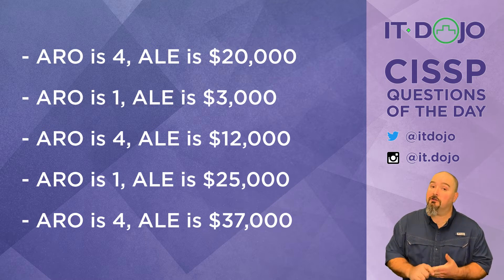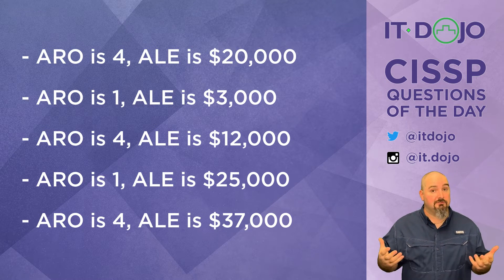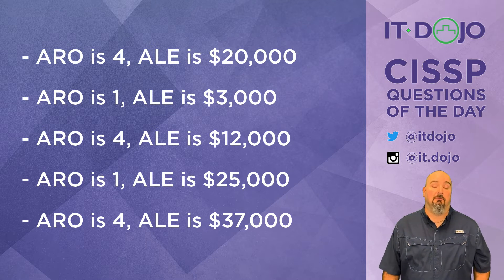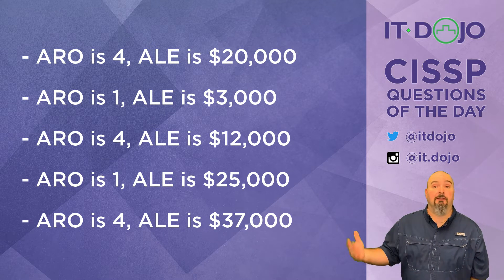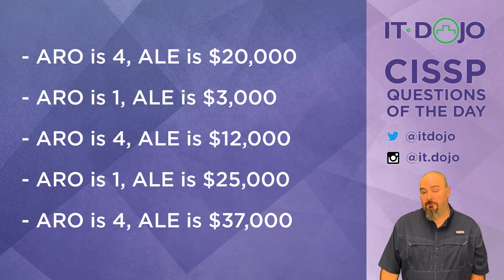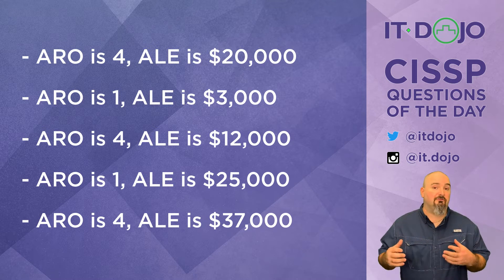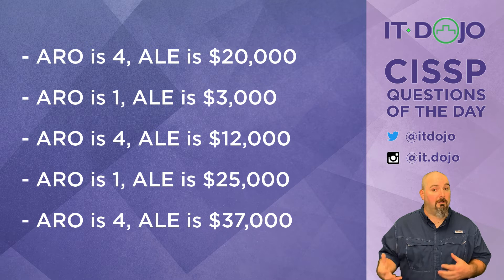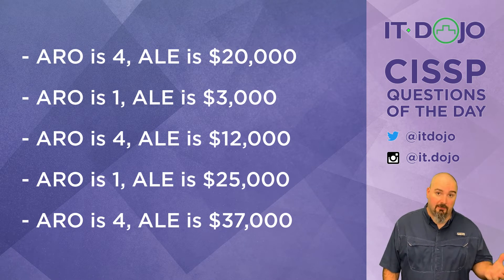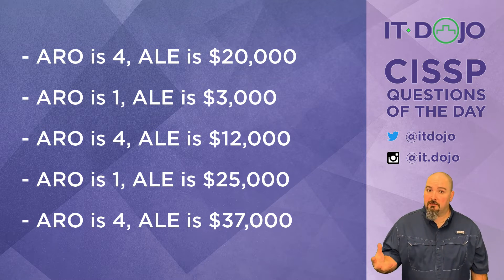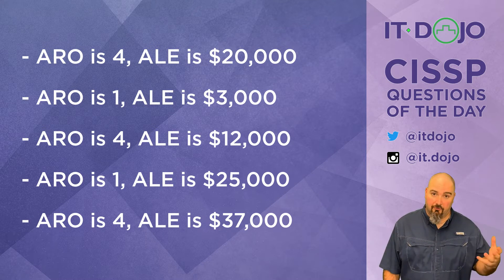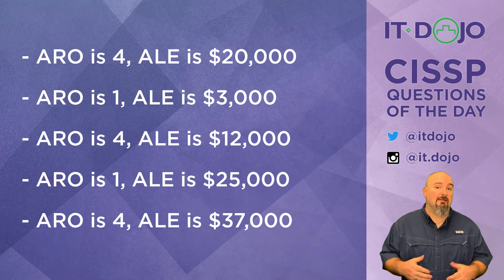Your annualized rate of occurrence is how many times is this going to happen in a year? Well, we're told that quite plainly — it's going to happen four times a year. So that's your ARO. How much is it going to cost you when it happens once? $3,000. How many times is it going to happen in a year? Four. So if it costs you $3,000 each time and it happens four times a year, three times four is twelve. So your annualized loss expectancy is going to be $12,000.